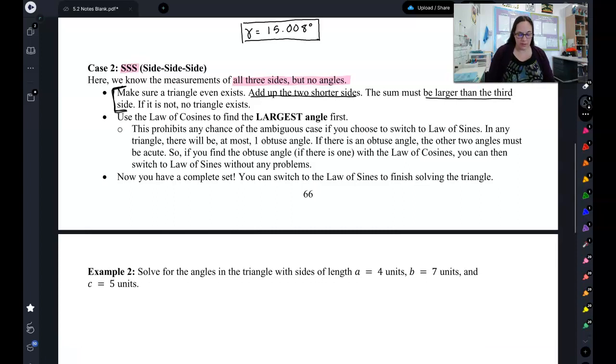Basically, you add up the two shorter sides, and that needs to be larger than the third side. So I'll give you an example in example two. We're going to take the two shorter sides. Shorter sides are four and five. That needs to be greater than the third side. In this case, nine is greater than seven, so a triangle does exist. You're good to go. Anytime you have side, side, side, you should get in the habit of just checking that first. If there is no triangle, your answers are DNE, and you're done. You can move on with your life.